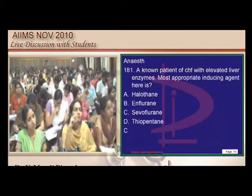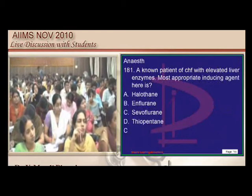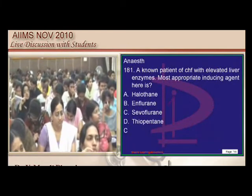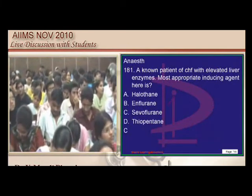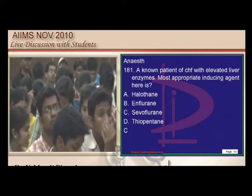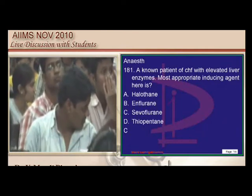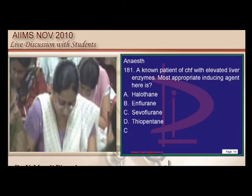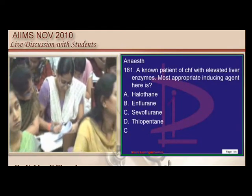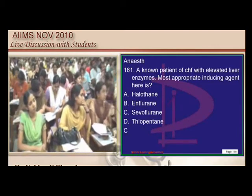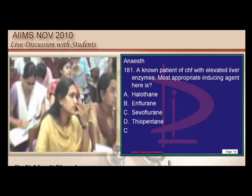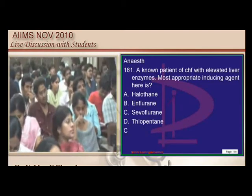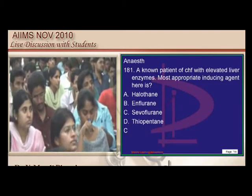In a patient with CHF requiring anesthesia, you cannot give halothane or thiopentone. Between isoflurane and sevoflurane, isoflurane has higher hepatotoxicity, so sevoflurane is the better option — from an anesthetist's perspective.